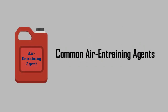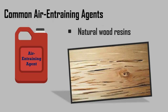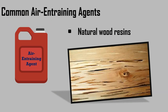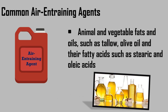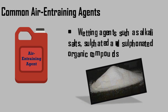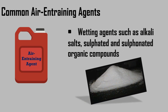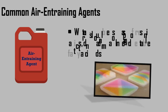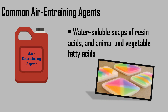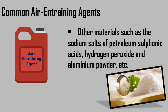The common air-entraining agents are natural wood resins; animal and vegetable fats and oils such as tallow, olive oil, and their fatty acids such as stearic and oleic acids; wetting agents such as alkali salts; sulfated and sulfonated organic compounds; water-soluble soaps of resin acids and animal and vegetable fatty acids; and other materials such as sodium salts of petroleum sulfonic acids, hydrogen peroxide, and aluminium powder, etc.